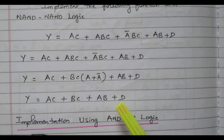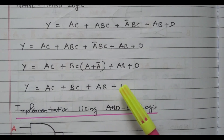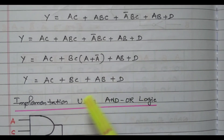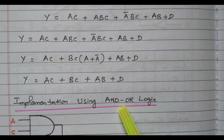Now we need to implement this expression using logic gates. First we will implement with the normal AND and OR logic, then we will go to the NAND gate.